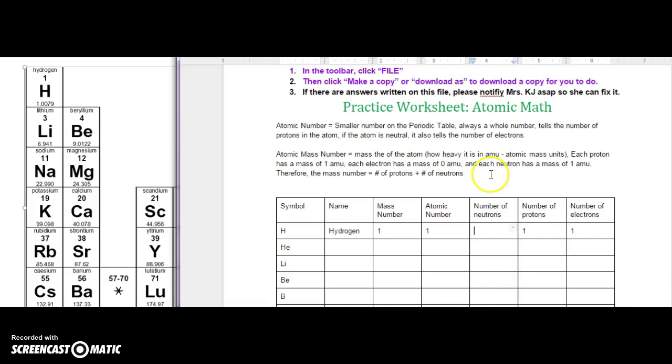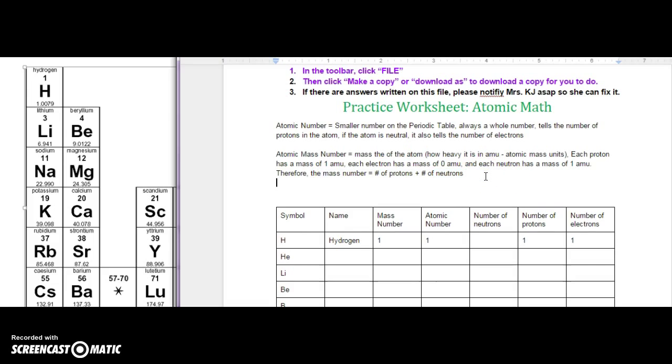To find the number of neutrons, we have to algebraically rearrange this equation. So we can say the number of neutrons equals the mass number minus the atomic number, or the mass number minus the number of protons. Either way, because they're the same thing. So 1 minus 1 equals 0. Hydrogen does not have any neutrons.